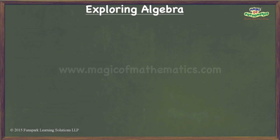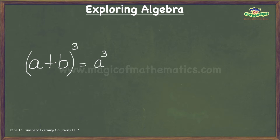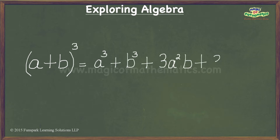In this video, I intend to give you a visual proof for the algebraic identity: a plus b, the whole cube, is equal to a cube plus b cube plus 3a squared b plus 3ab squared.